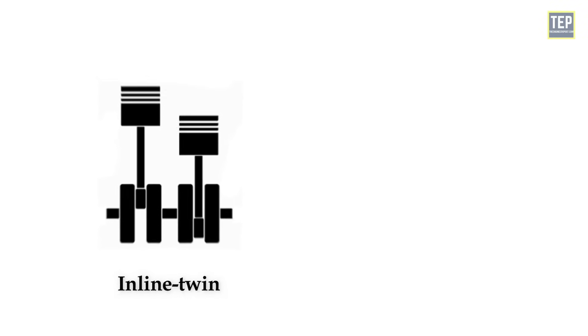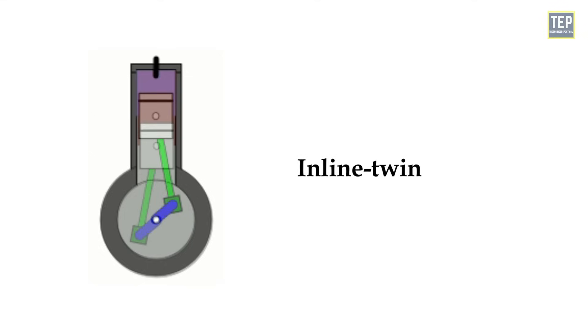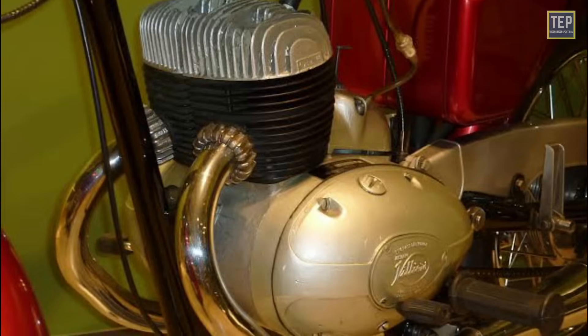Ideally, the inline twin engine is placed in line with the bike's frame, meaning one cylinder is kept face on and the other is kept behind it. Usually, this kind of cylinder configuration exists in early motorcycle models.